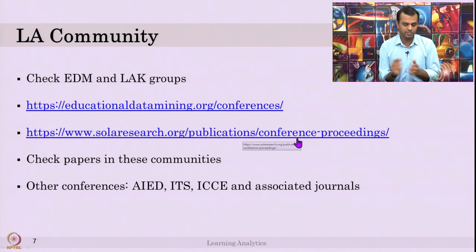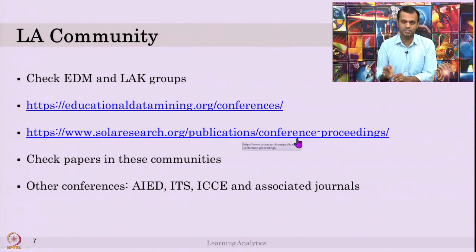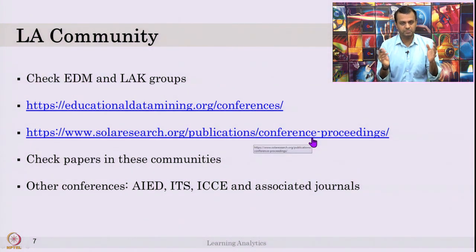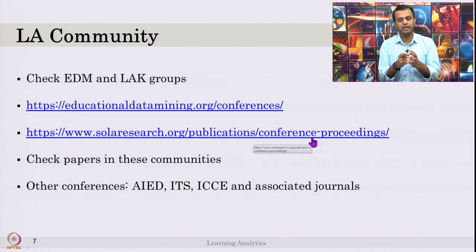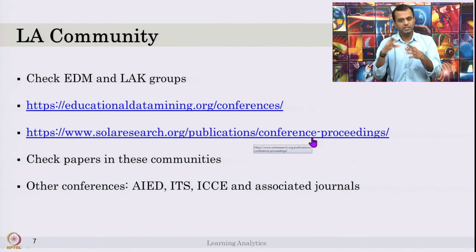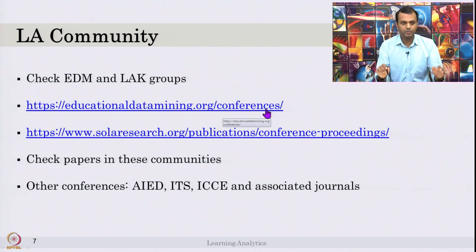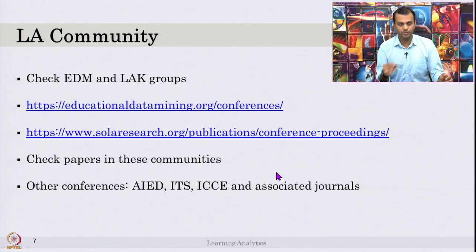Nowadays most researchers upload their papers on their own personal web pages — go and check the personal page or ResearchGate. It is all happening; people are moving towards more open access compared to keeping it behind a cost. There is no need to pay for a journal unless it is necessary and important. You can also talk to a researcher and find similar research publications by the same researcher — they will be available, so go and read them. Educational research is also going completely open source.